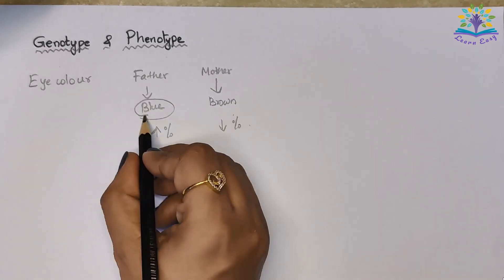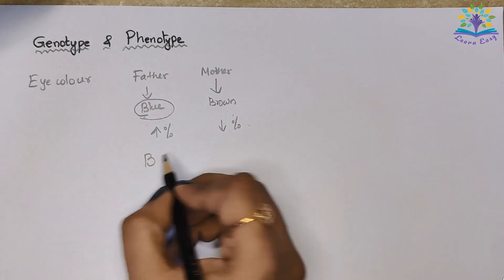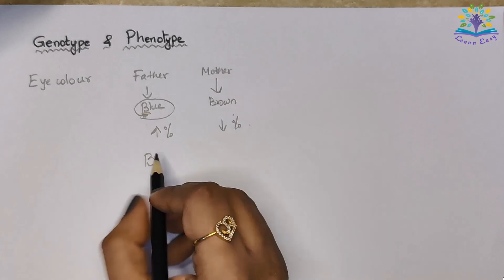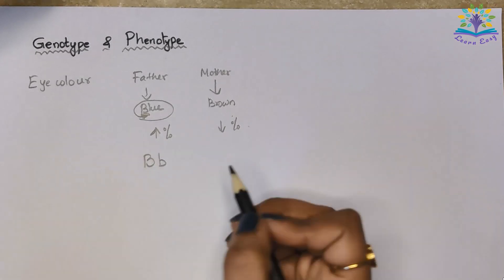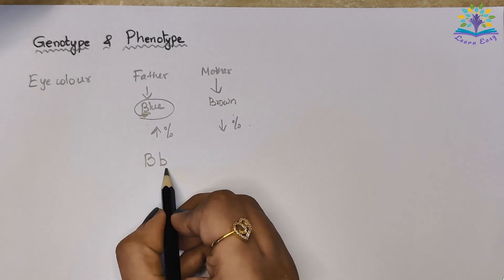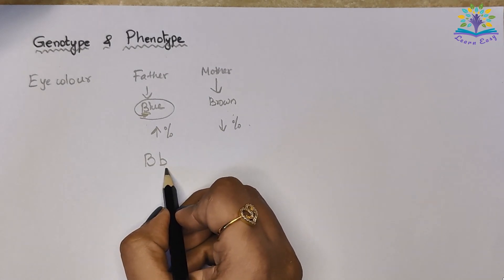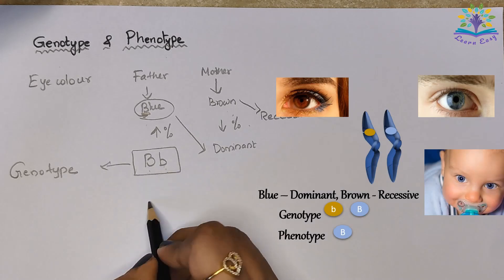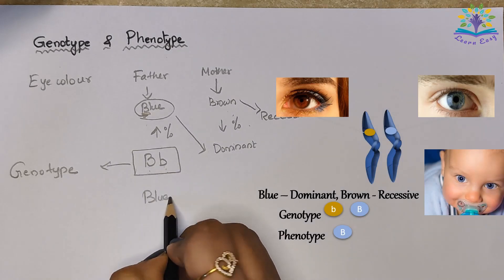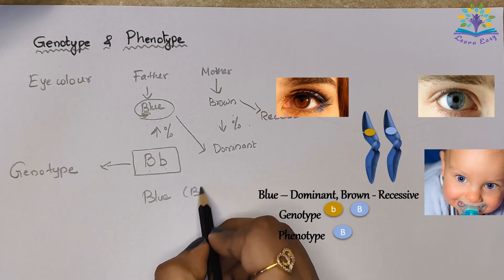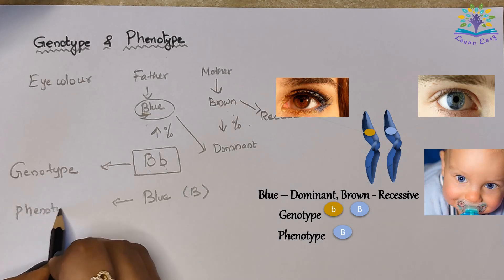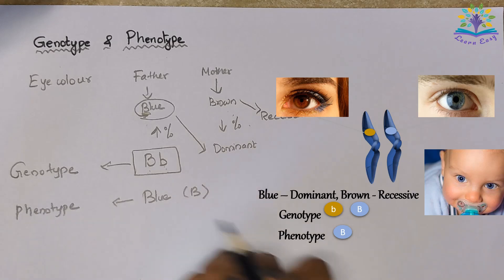The dominant allele is represented by its first letter and is written in uppercase. The recessive allele is denoted by the dominant's lowercase. So here, blue is represented by uppercase B and brown is represented by lowercase b. This means we might have genes for both blue and brown eyes, but blue gets expressed as it is dominant. So if we consider the character eye color, the genotype is Bb and the phenotype is blue.